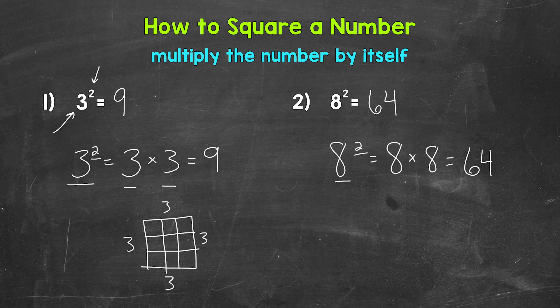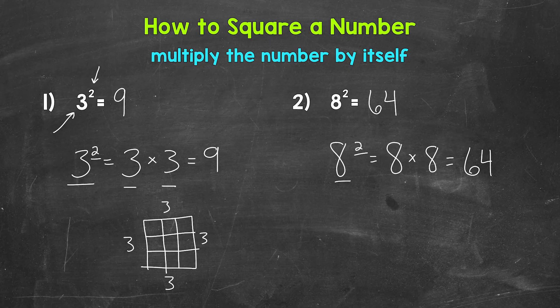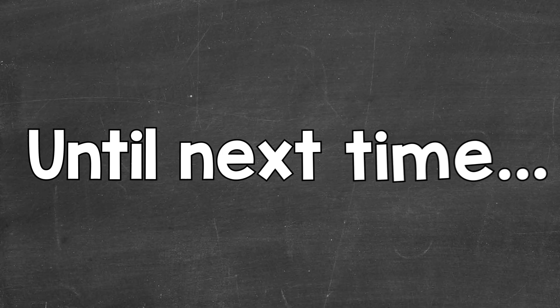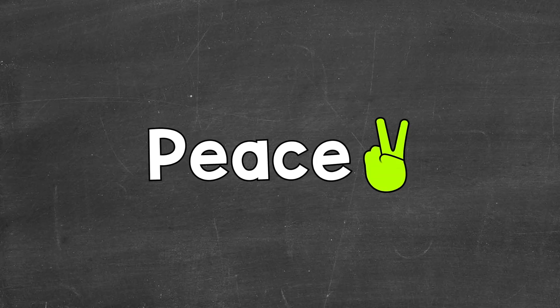So there you have it. There's how to square a number. Multiply the number by itself. You're expanding that number out twice and multiplying. I hope that helped. Thanks so much for watching. Until next time, peace.